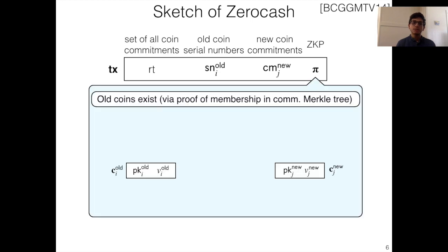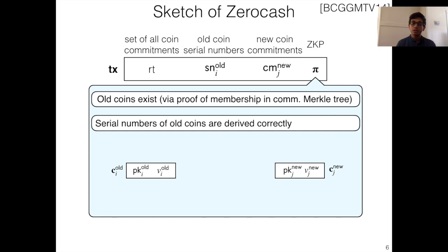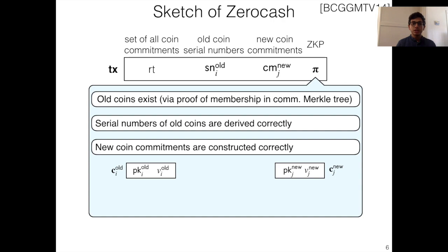Namely, it asserts that all of the coins that we're spending actually exist via proof of membership in a commitment Merkle tree. Next, it asserts that the serial numbers for these spent coins are actually derived correctly, which ensures the soundness of our double spending check. After that, it checks that the new coin commitments are constructed correctly, so that they actually contain values and not just some arbitrary garbage. And finally, and perhaps most important, the zero-knowledge proof asserts that value is conserved, which means that the sum of the input values is equal to sum of the output values.